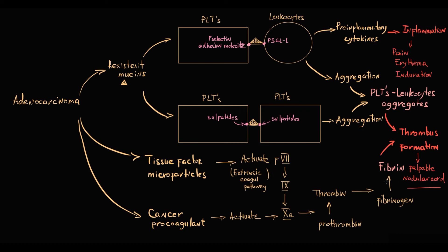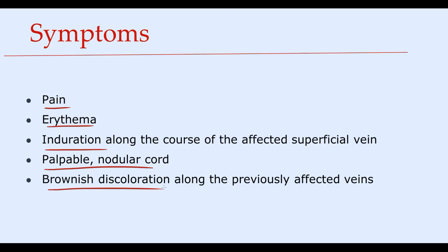And also we can find brownish discoloration along the previously affected veins. And this discoloration is caused by hemosiderin deposition in the previously affected site.